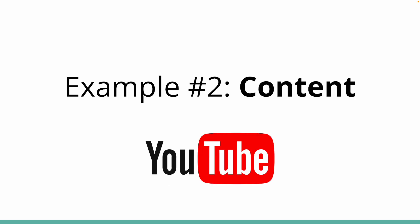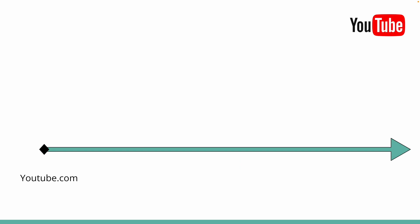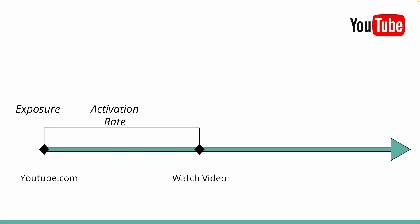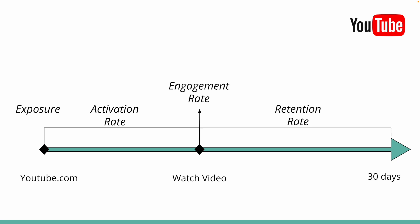Let's do another example — YouTube. The homepage is the start of the journey and watching a video is the key action. Onboarding isn't required for watching a video, so we'll leave it out. Your exposure metric is the number of people at the homepage, your activation rate is the conversion rate from exposure to watching the first video, your engagement rate is the number of videos watched per video watcher, and your retention rate is the percentage of activated users who still watch videos after 30 or more days. For the focus metric, I'll go with daily active users because YouTube gets used by all sorts of people on all days of the week.